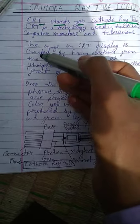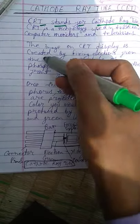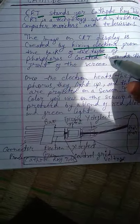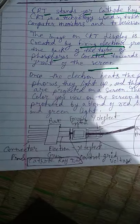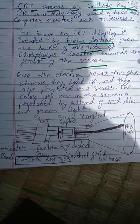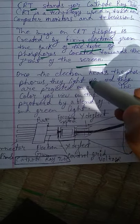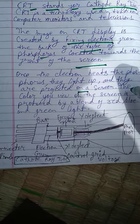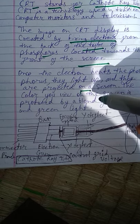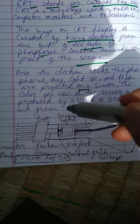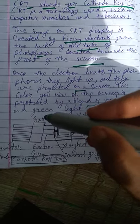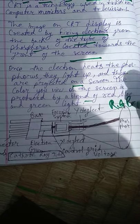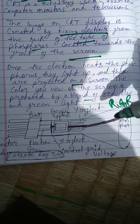The image on a CRT display is created by firing electrons from the back of the tube towards the phosphorus-coated front of the screen. Once the electrons hit the phosphorus, they light up and are projected on screen. The color you view on the screen is produced by a blend of red, blue, and green light — this combination is called the RGB combination.